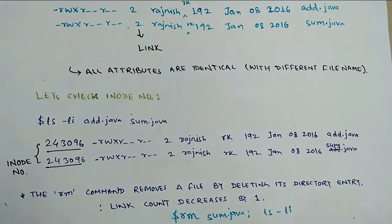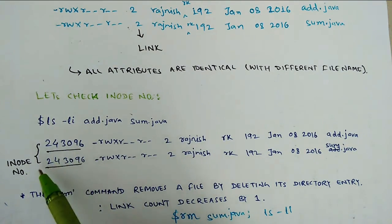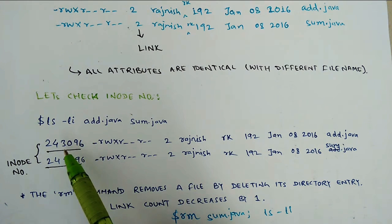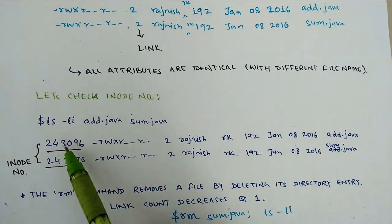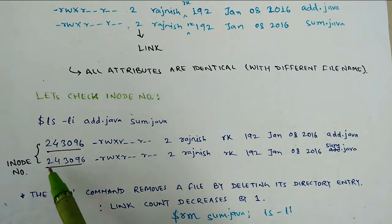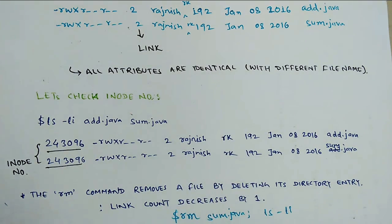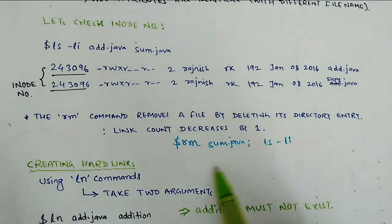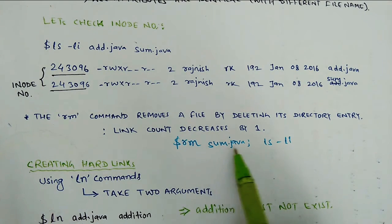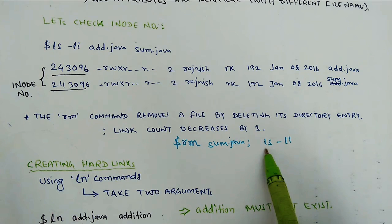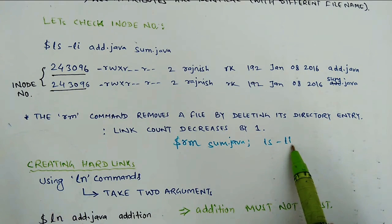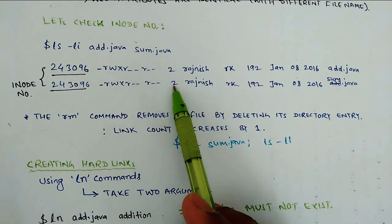Now, we can check the inode number. Run the command ls -li. You can see all the details. If we check add.java and sum.java, you can see the first column number. There is a number that is the inode number. Now if we remove using the rm command, then the link count will be decreased.